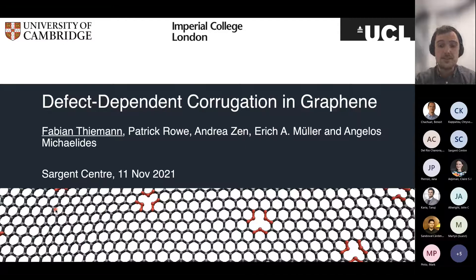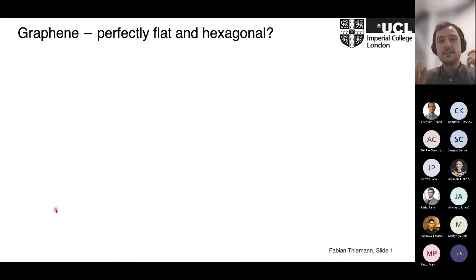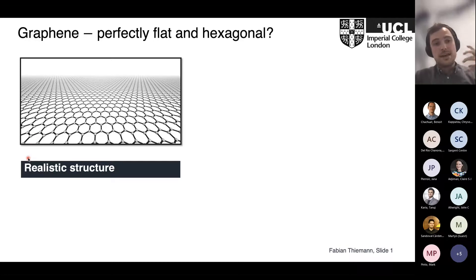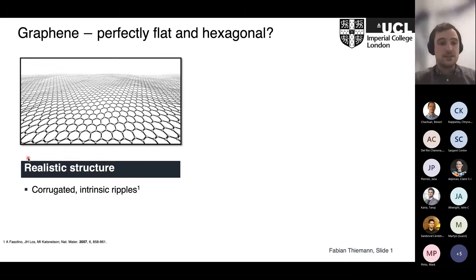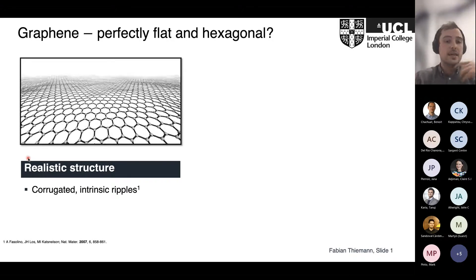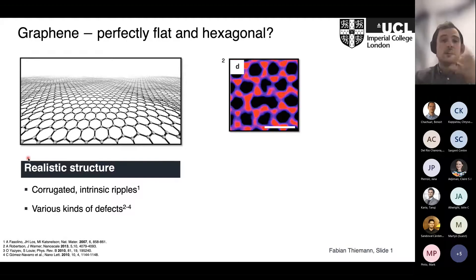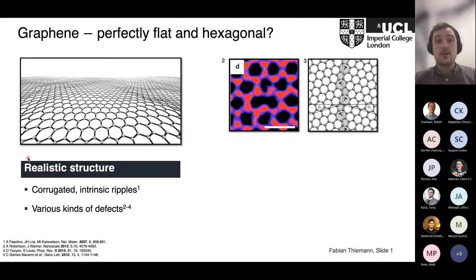This was published recently in Nano Letters, where we focus on how defects change the morphology. I'll start with an idealized picture we usually have in mind. When we think of graphene, we imagine a flat surface comprised of hexagons. In reality, this is not the case because at finite temperature we have corrugation, intrinsic ripples propagating through the sheet, and various kinds of defects present. This can range from individual atoms being removed or bonds being rotated to even more complex defects such as grain boundaries.